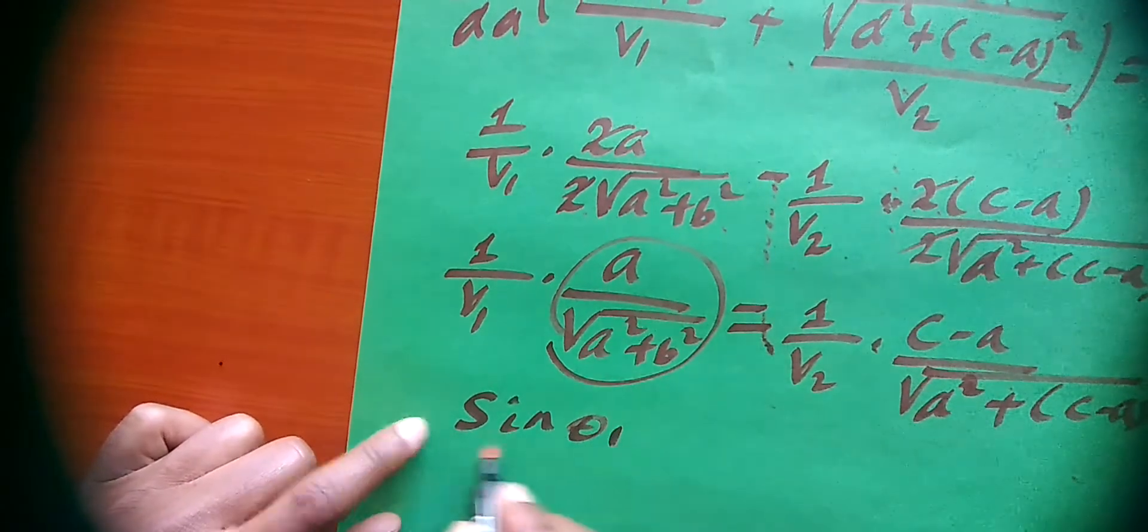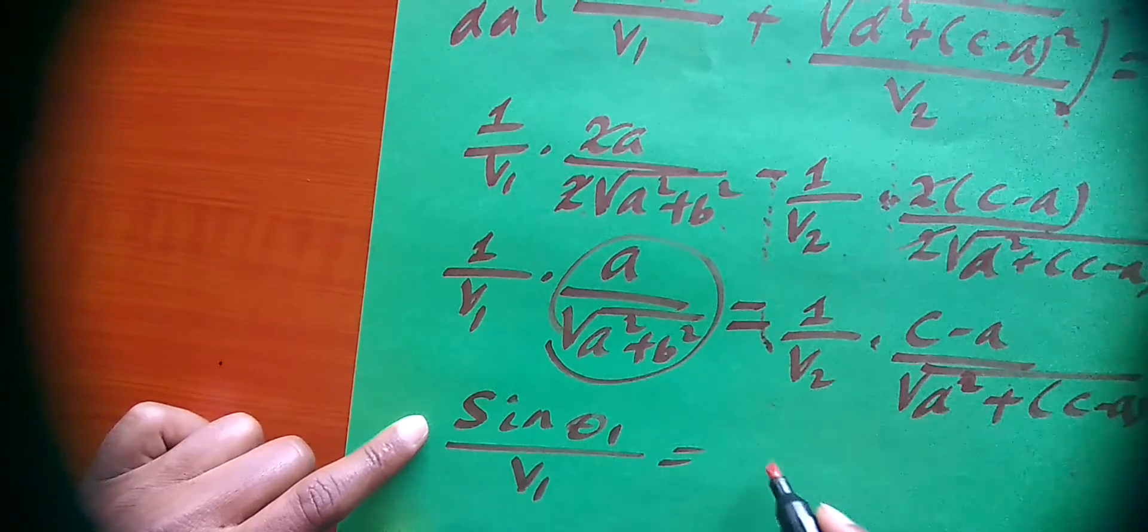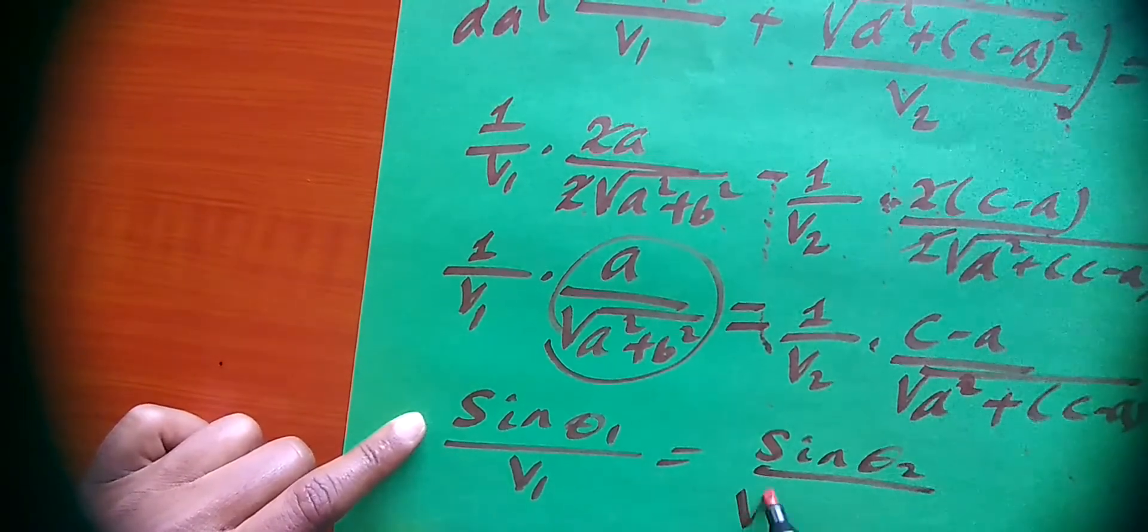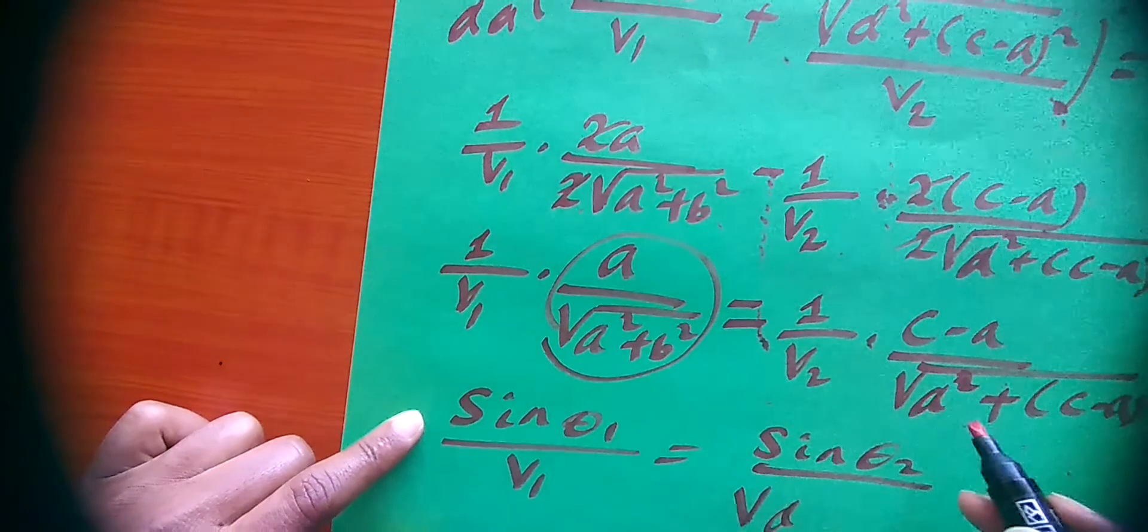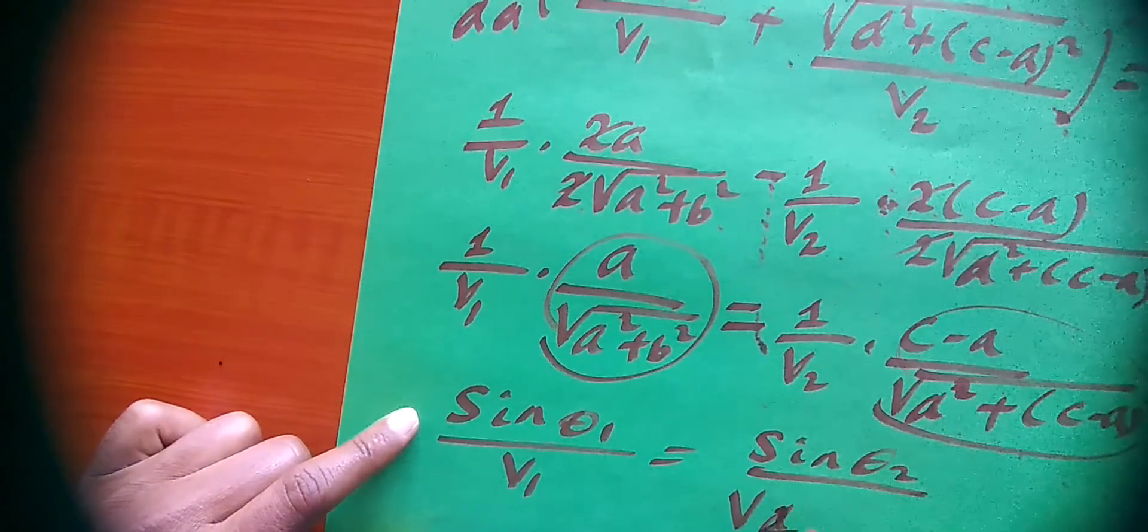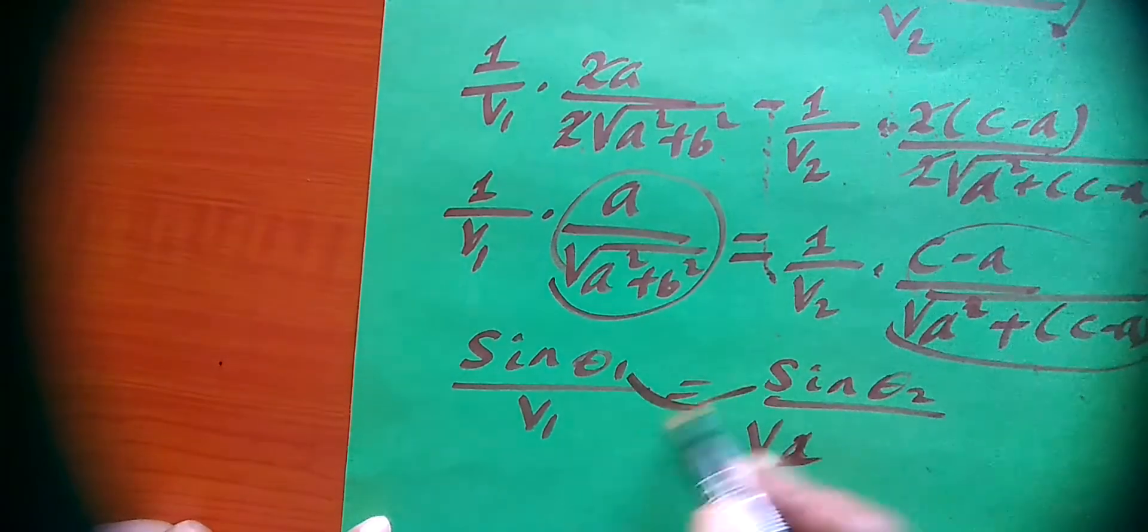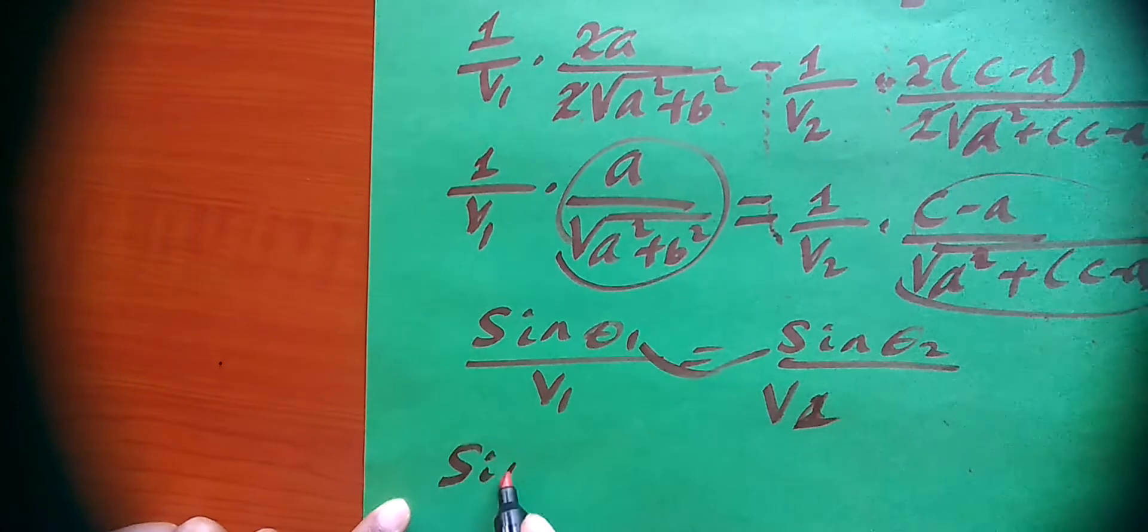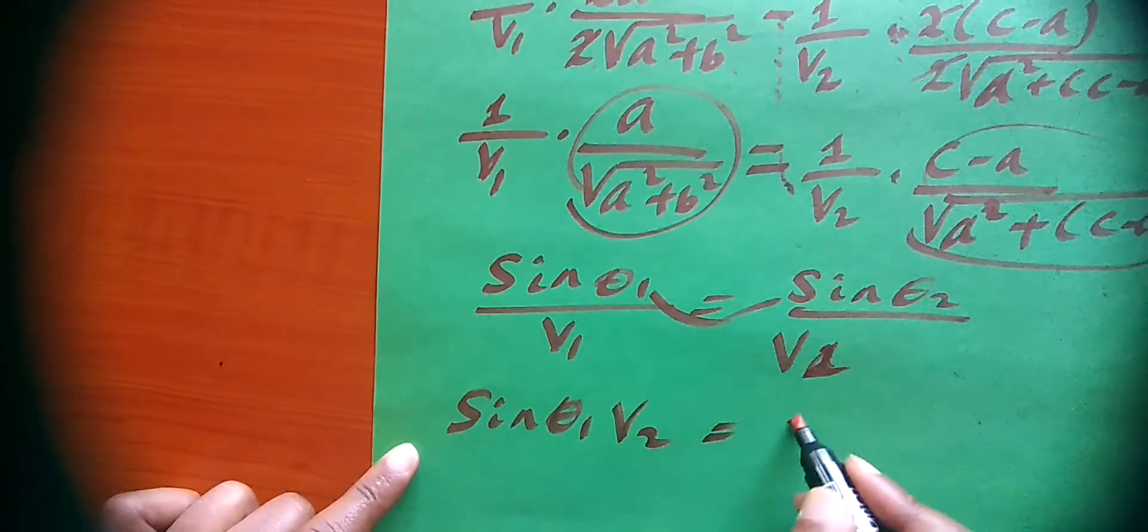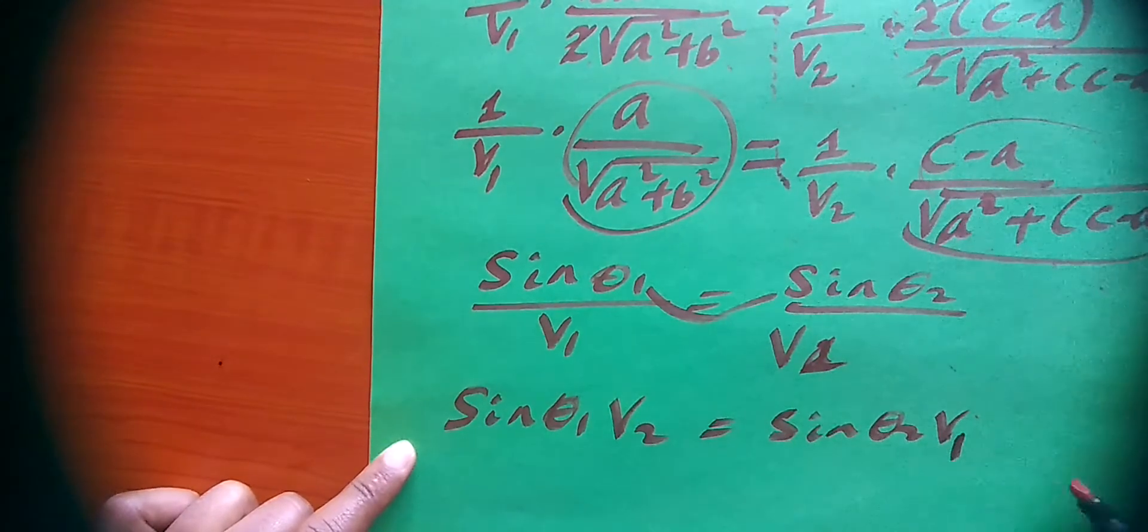So we have sine theta one over v1 equals sine theta two over v2. Cross multiplying gives sine theta one times v2 equals sine theta two times v1.